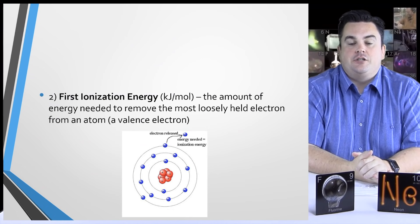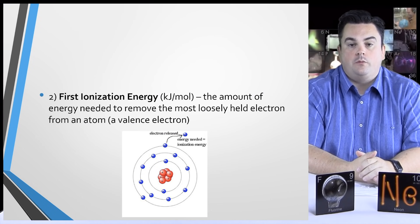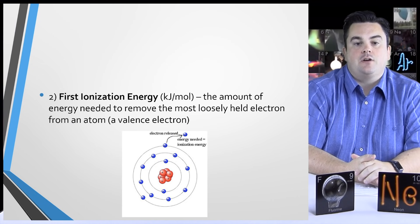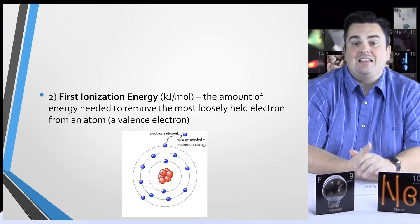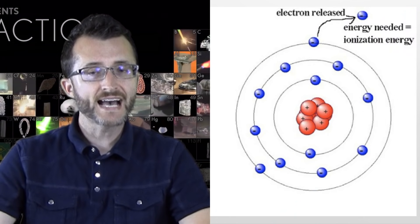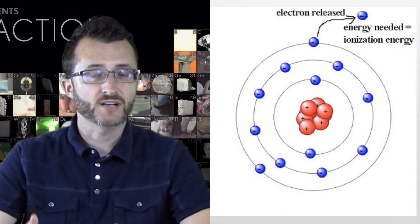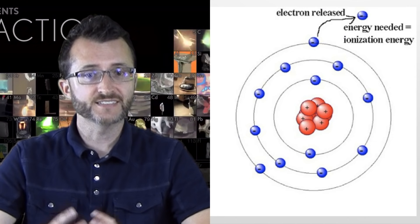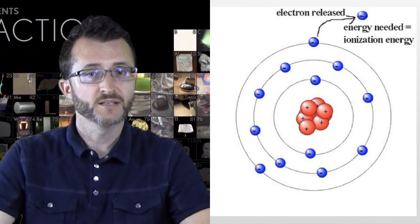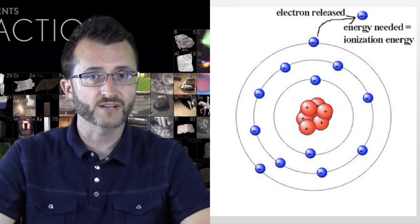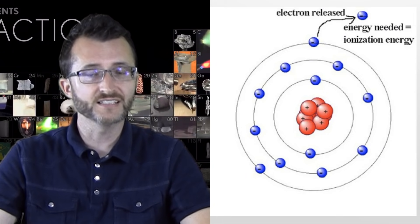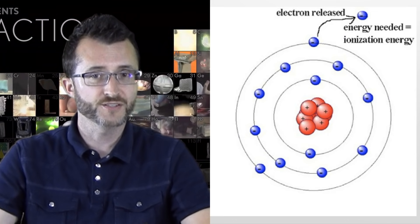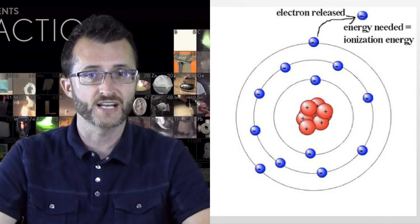First ionization energy, in kilojoules per mole — the amount of energy needed to remove the most loosely held electron from an atom. It's a valence electron. The most loosely held electron is the valence electron — the electron in the outermost shell, the one farthest from the nucleus. It is still held by the nucleus because the nucleus attracts its electrons. Because it's still held, it's going to require some energy, not necessarily a lot, because it's the most loosely held. For this reason, we call it the first ionization energy.